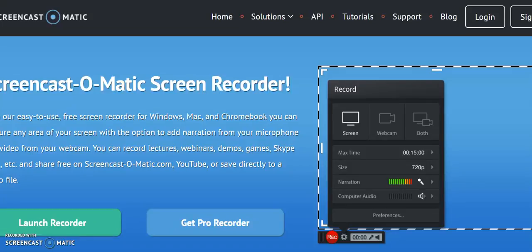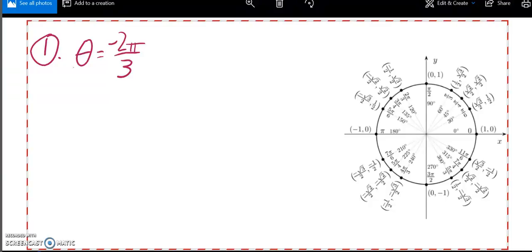This is Math 142, the final practice, and what we are going to try to do is find all six trig functions of this angle theta, and it's negative 2 pi over 3.